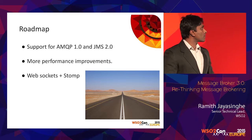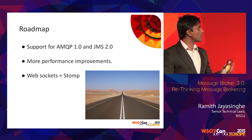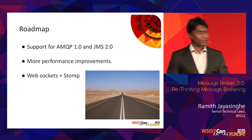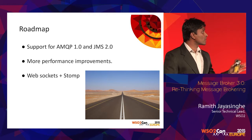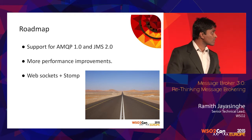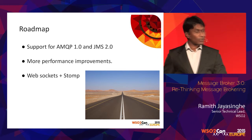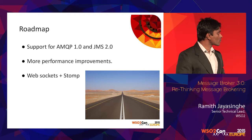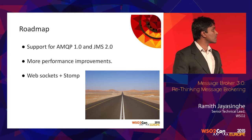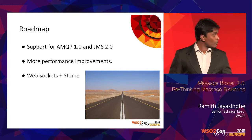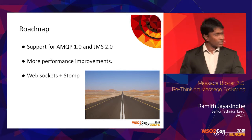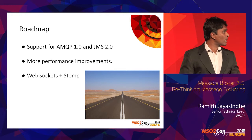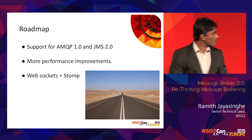On the roadmap: we want to implement AMQP 1.0 and JMS 2 on top of it very quickly, keep improving performance, and implement the STOMP protocol, possibly over WebSockets. That's the immediate roadmap, and there will be more coming.